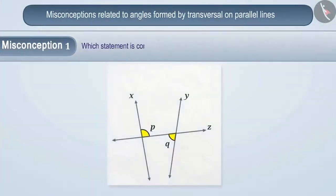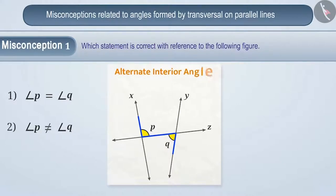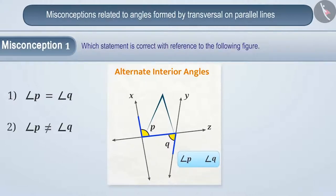Misconception 1. Which statement is correct with reference to the following figure? Some children memorize that the Z-shaped angles are the same. The shape of Z in the figure represents alternate interior angles. Since angle P and angle Q in the figure are formed by these alternating angles, the Z shape leads them to assume that angle P and angle Q are equal.